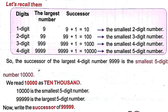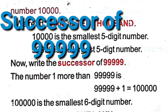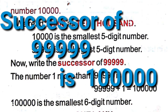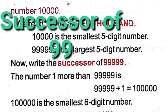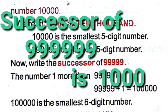The successor of the largest four-digit number, 9999, is 10,000, the smallest five-digit number. Likewise, the successor of the five-digit largest number is the six-digit smallest number. The successor of the six-digit largest number is the seven-digit smallest number.